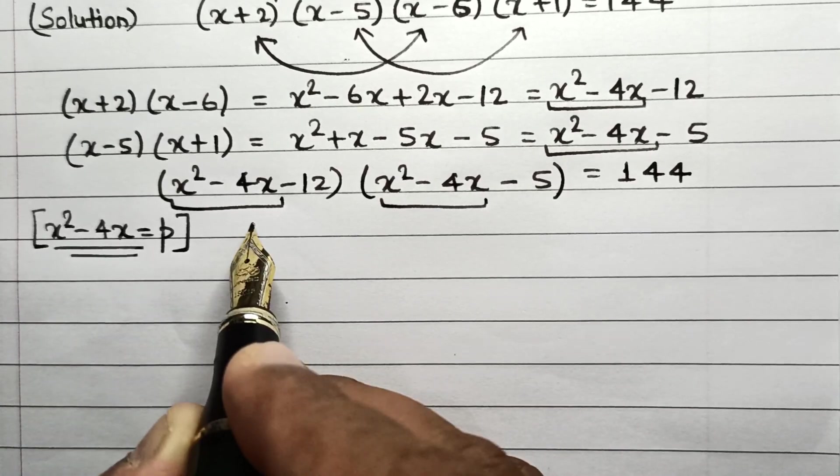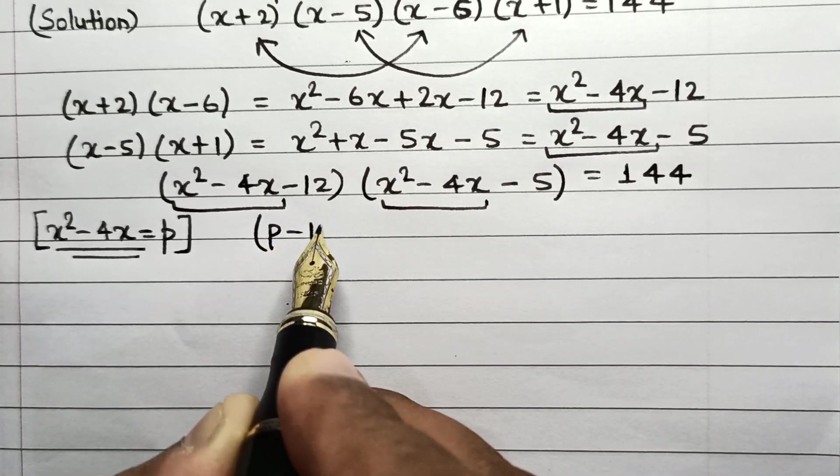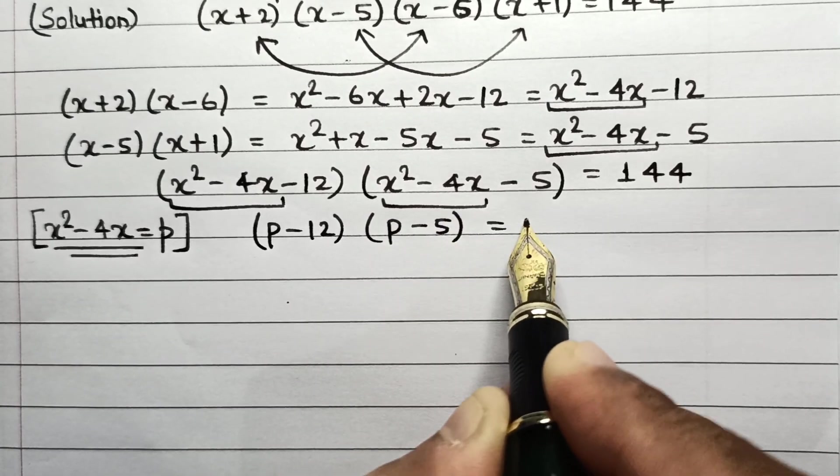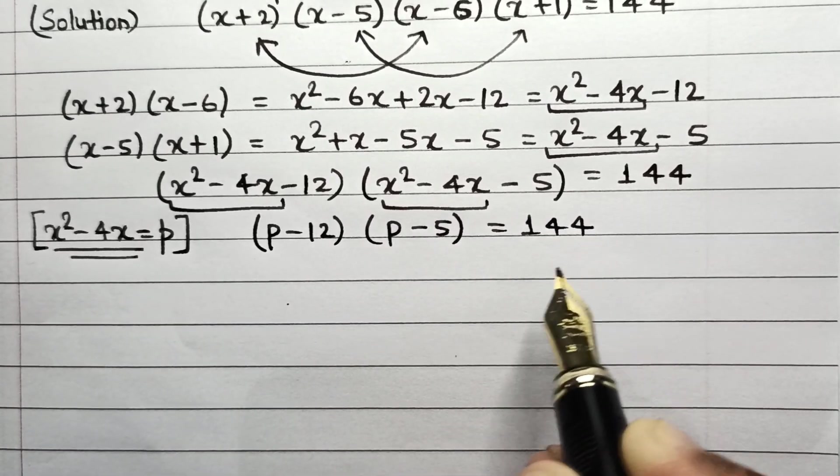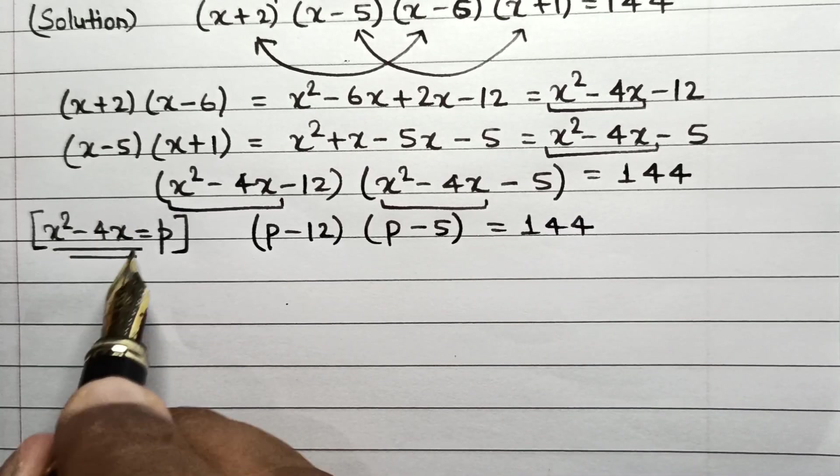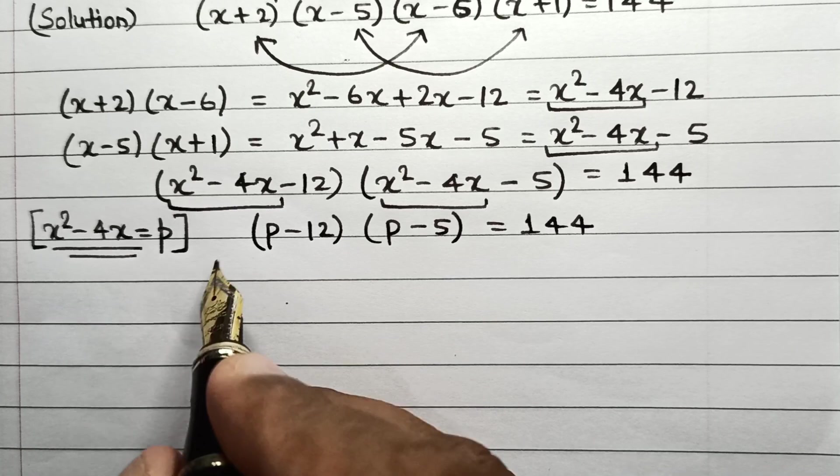So the advantage of doing this will be: (p - 12)(p - 5) = 144. So now all we have to do is just solve this, find the value of p, and then resubstitute it into this part to calculate the value of x.